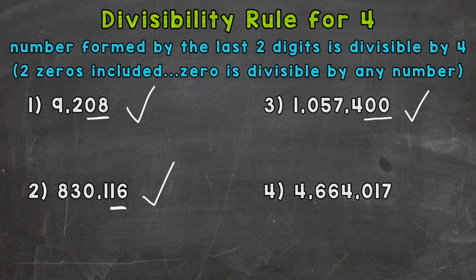And lastly, number 4, we have 4,664,017. The last two digits, we have 17 here. Now 17 is not divisible by 4, therefore 4,664,017 is not divisible by 4 either. So this one is a no.